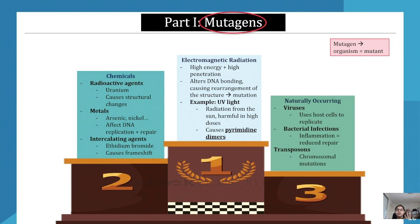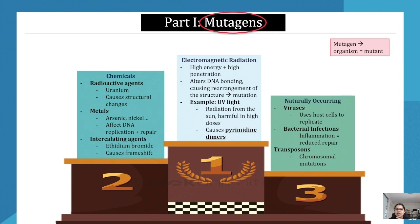A mutagen is an organism that causes mutations. A mutagen can also be known as a mutant. There are three types of mutagens that we're looking at: chemical, electromagnetic, and naturally occurring.